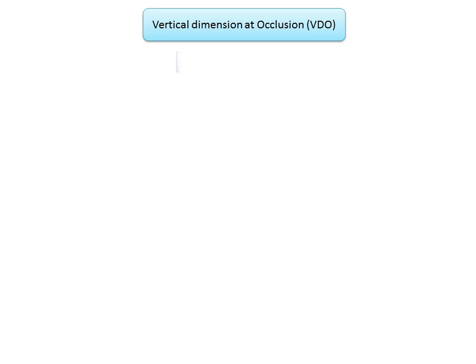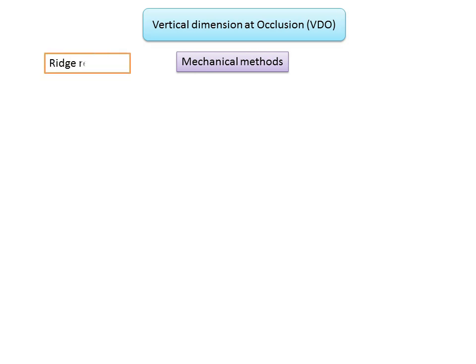Now let's look at the methods for recording VDO — the vertical dimension at occlusion. Broadly, the methods can be divided into mechanical methods and physiological methods. Mechanical methods are so called because they do not require any functional movement.